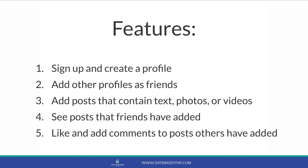So what kind of features would exist in a new social network like Facebook? Here's a list of basic features we can use: sign up and create a profile, add other profiles as friends, add posts that contain text, photos or videos, see posts that our friends have added, and like and add comments to posts that others have added. How can we create a database design that implements these features? We can look at them one at a time, creating a design and making some assumptions along the way.